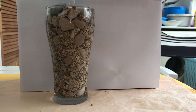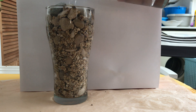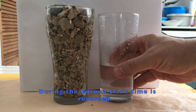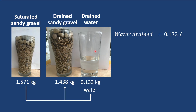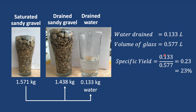In our experiment, 0.133 kilograms of water was drained out of our sandy gravel, which is 0.133 liters because a liter weighs one kilogram. The volume of our glass is 0.577 liters, so we can calculate the specific yield by dividing the volume of water by the volume of our sample, and it comes out at 0.23 or 23 percent. Now if you remember, our total porosity was 28 percent. So what happened to the remaining 5 percent?